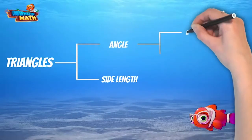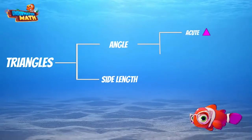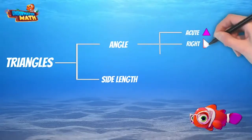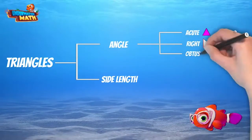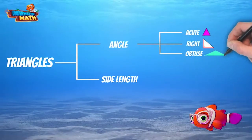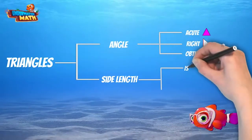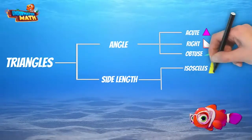When we classify by angle, we have acute triangles, which have all acute angles; right triangles, which have one right angle; or obtuse triangles, which have one obtuse angle. We can also classify by side length. Isosceles triangles have two sides that are the same length.